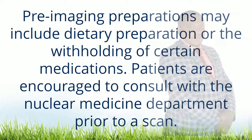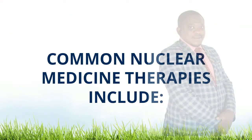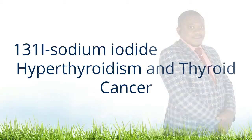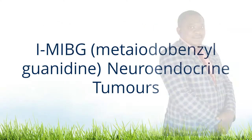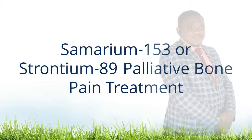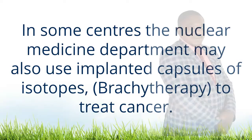Some nuclear medicine procedures require special patient preparation before the study to obtain the most accurate result. Pre-imaging preparations may include dietary preparation or the withholding of certain medications. Common nuclear medicine therapies include: 131-I-sodium iodide for hyperthyroidism and thyroid cancer; yttrium-90-ibritumomab tiuxetan (Zevalin) and iodine-131-tositumomab (Bexxar) for refractory lymphoma; MIBG (metaiodobenzylguanidine) for neuroendocrine tumors; samarium-153 and strontium-89 for palliative bone pain treatment. In some centers the nuclear medicine department may also use implanted capsules of isotopes (brachytherapy) to treat cancer.